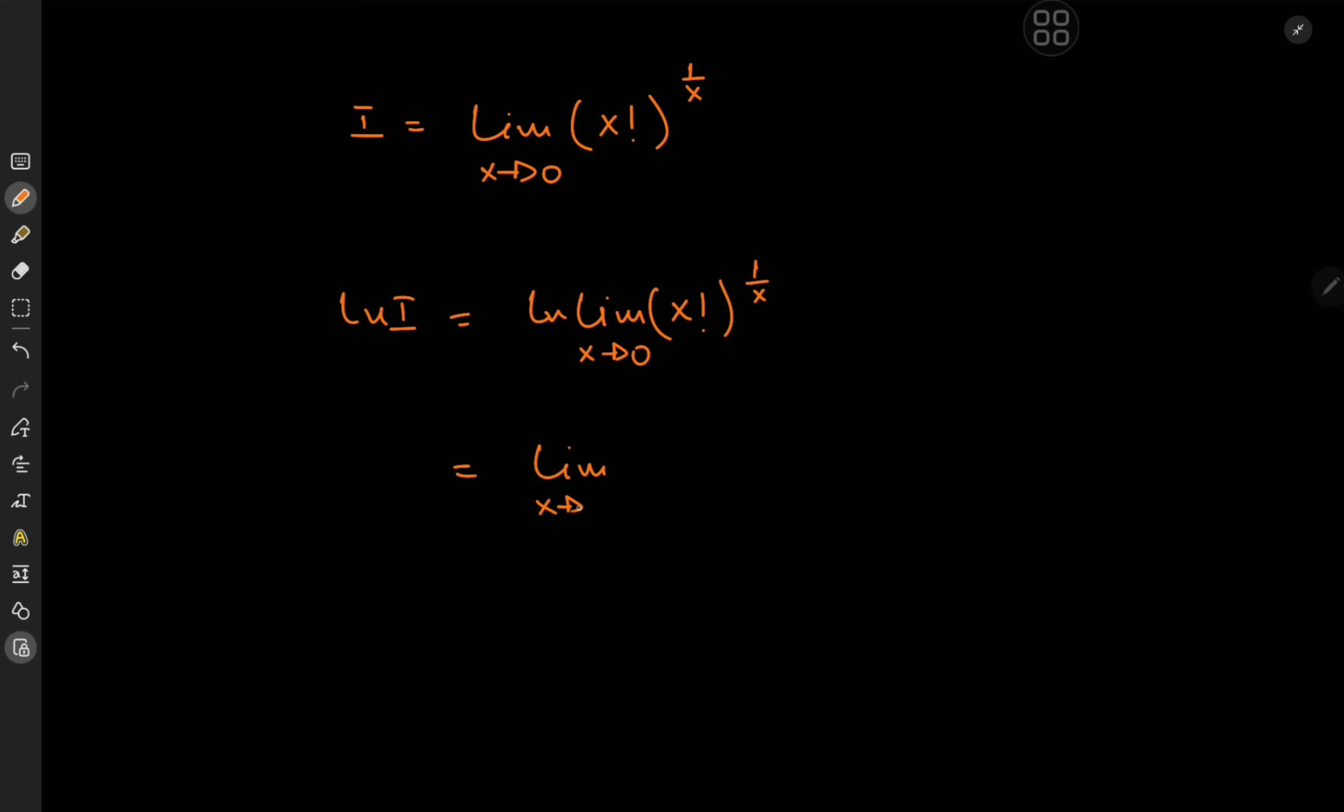So we have the limit as x approaches 0 of log x factorial to the 1 over x and of course making use of the properties of the logarithm we can write this as the limit of 1 over x times log x factorial. Now my initial approach was to maybe express this as something that can be evaluated using L'Hôpital's rule and for that I expanded the x factorial as follows. We have the limit as x approaches 0 of 1 over x times log x times x minus 1 all the way to 2 times 1, and very quickly you can see where exactly this approach goes wrong.